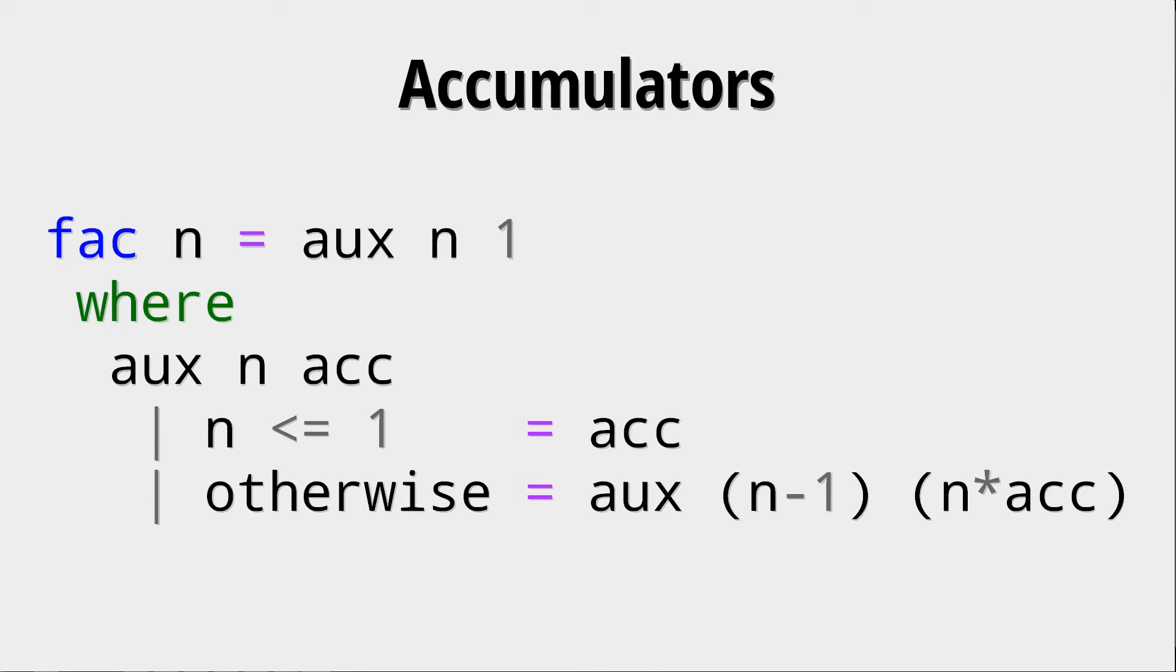Now the question is why would we do this and why is it helpful? Well let's look at what the definitions of this auxiliary function are. In the first case n is smaller or equal to 1 we return a constant. This is a constant, it at least is a constant value since that is what our auxiliary function gets anyways. So this definition is no problem, we just return the value ACC that we got in the function call.